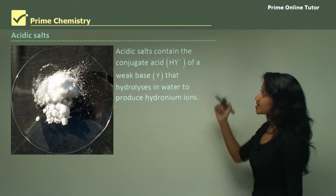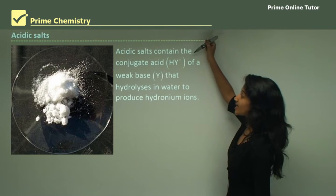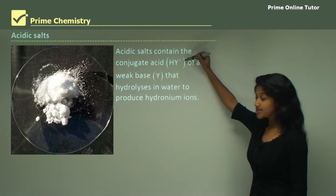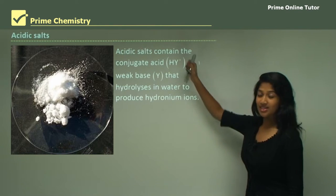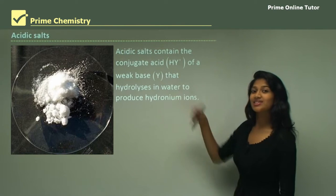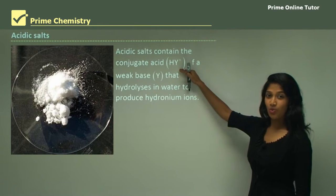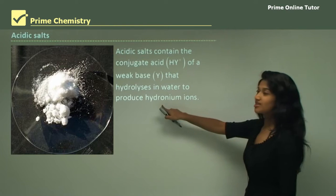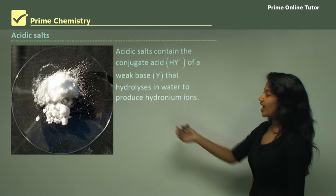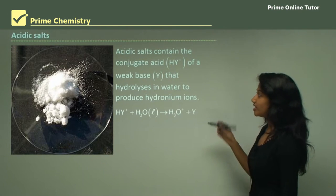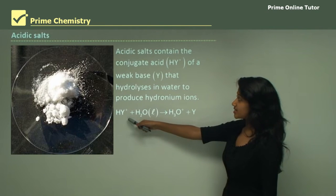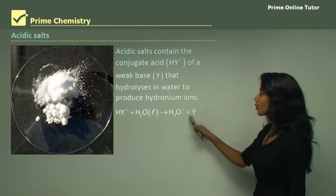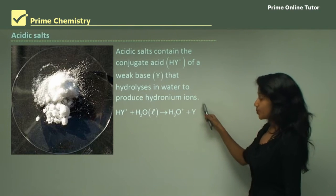Acidic salts contain a conjugate acid. For example, HY⁺ is the conjugate acid of a weak base — meaning the weak base has gained a proton to form HY⁺, which hydrolyzes in water to produce the hydronium ion. The acid reacts in water to form the hydronium ion along with the weak base.